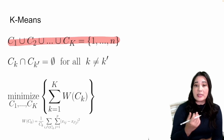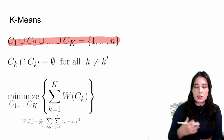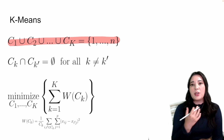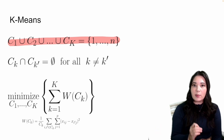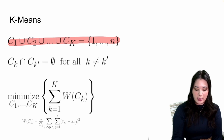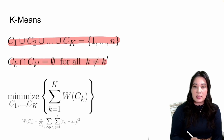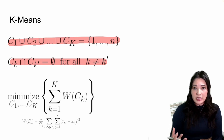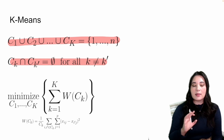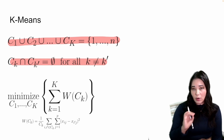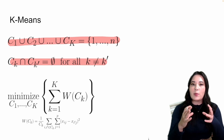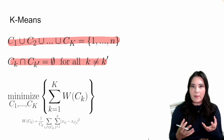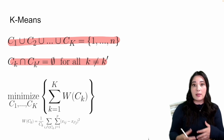In k-means, every single data point is in a cluster. If you take the data points in each individual cluster — C1, C2, etc. — and combine them, you get the entire data set. Data points only belong to one cluster. The intersection between two clusters is the empty set, meaning there are no data points that are in both cluster A and cluster B. The entire goal of k-means is to create groups that are cohesive — data points within a group are similar.